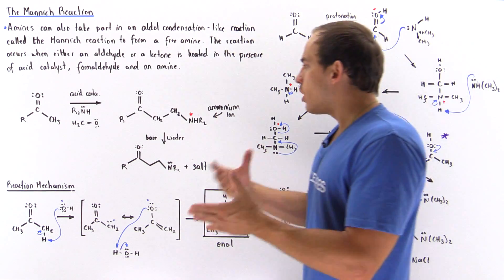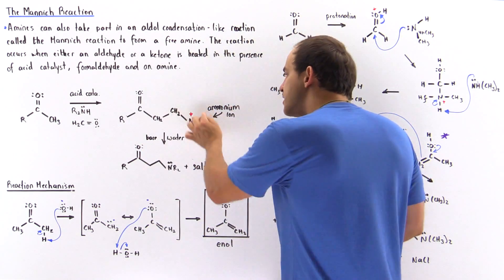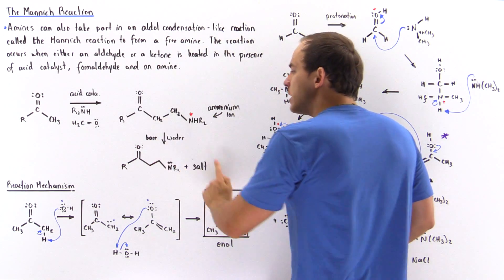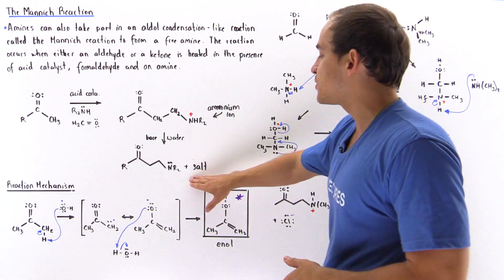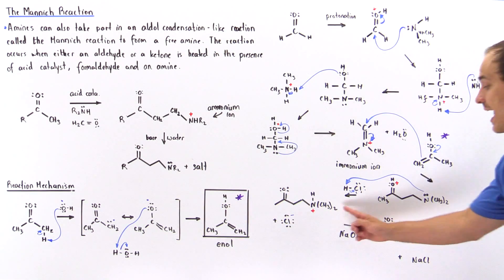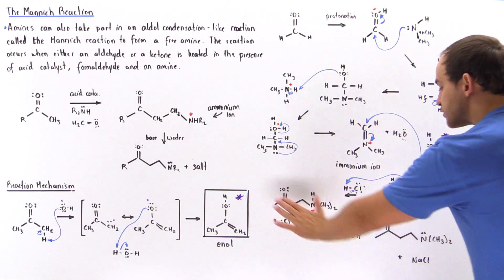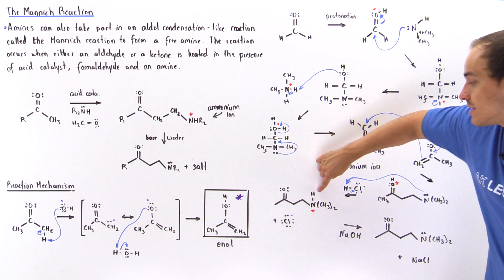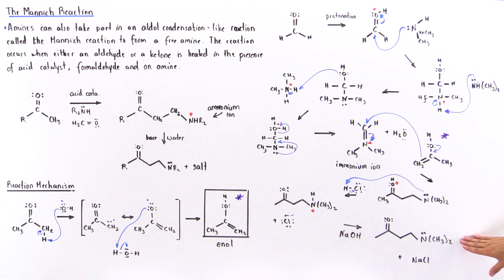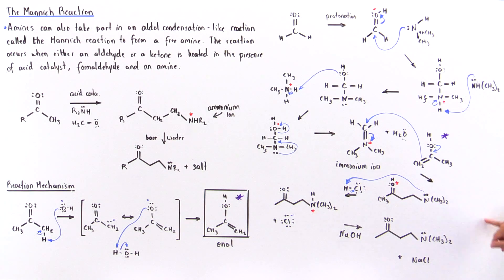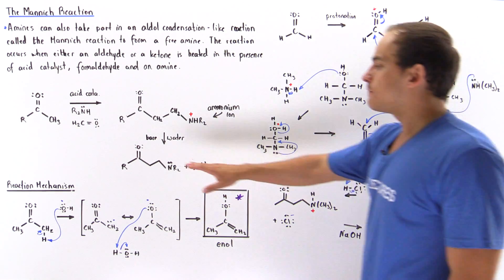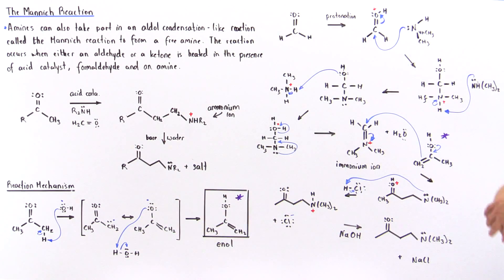In the next step, we transform the ammonium ion — which carries a full positive charge on nitrogen — into the final product. We add base and water: the hydroxide deprotonates the nitrogen proton, forming water, while the chloride combines with sodium to form NaCl. So we form a salt, water, and the final free amine product. This entire reaction is known as the Mannich reaction.